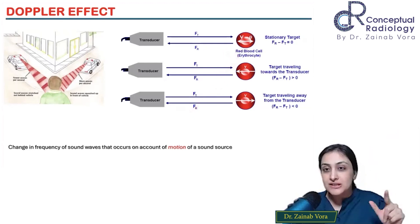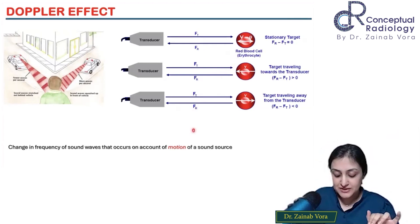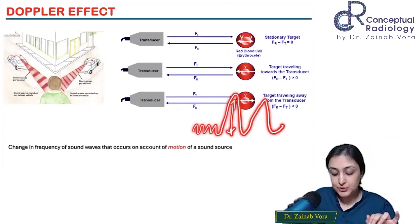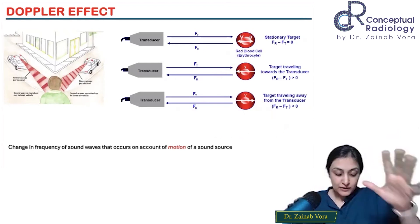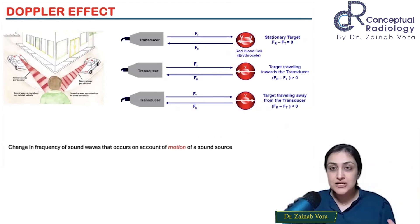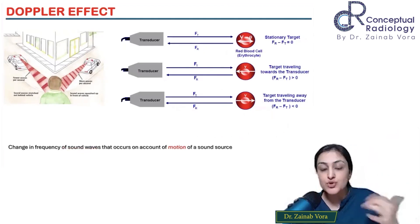When it comes to Doppler, everything has the same amplitude. Now I'm not concerned about amplitude, I'm concerned about frequency. That's the fundamental difference - amplitude comes into play in B-mode, frequency comes into play in Doppler. It's the change in frequency of sound waves occurring because of motion of a sound source.